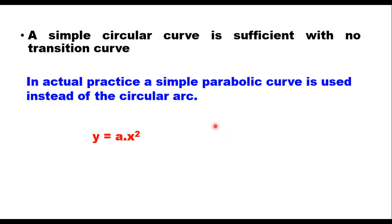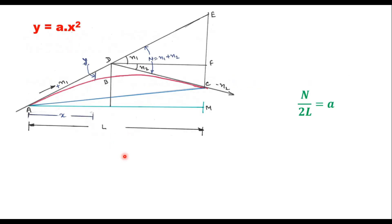A parabola is used because, due to the very low deviation angle, a simple parabola is nearly congruent with a circular arc between the same tangent points, and a parabola is easy to lay out because of simple mathematical equations to calculate the ordinates. Therefore, the equation of a summit curve is y = a·x², where y is the ordinate at a distance x and a is a constant. Considering a vertical curve between two tangents n1 (positive) and n2 (negative), the length of curve ABC is shown here, and at any distance x from point A, the ordinate y is taken from the tangent.